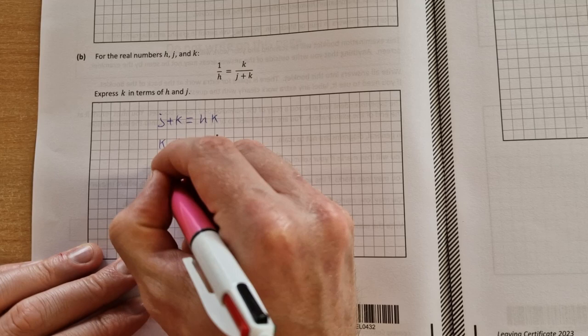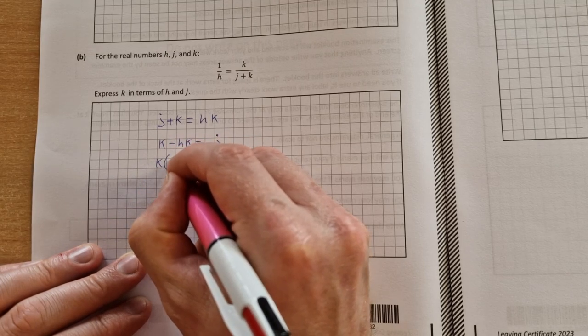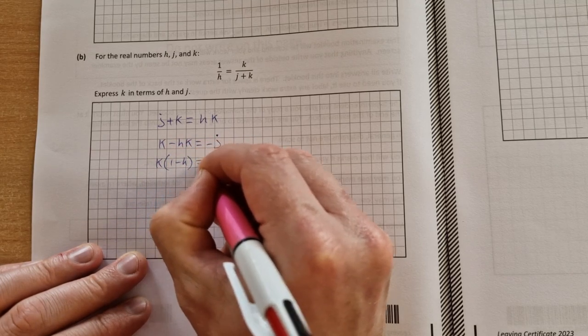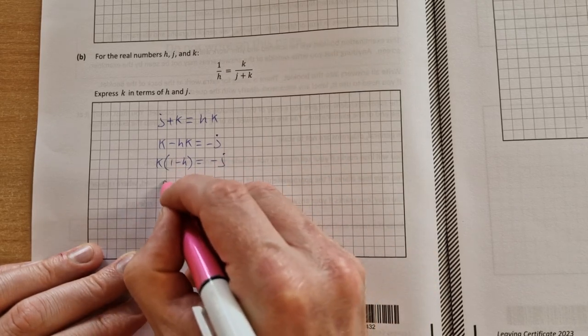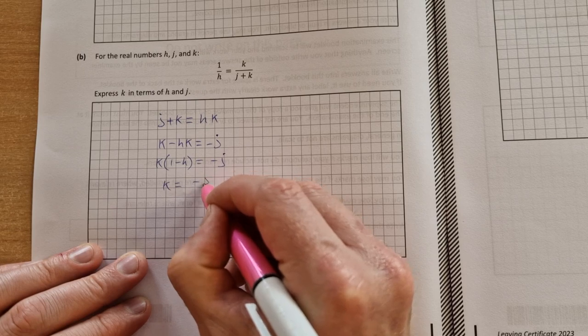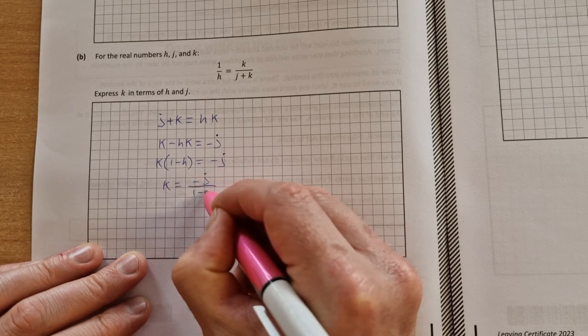Factorize out the k to get k times 1 minus h is equal to minus j, and then divide across by 1 minus h. So k is equal to minus j divided by 1 minus h.